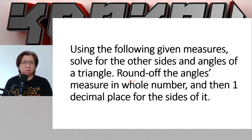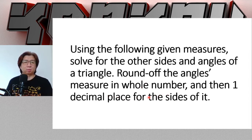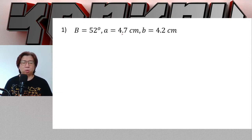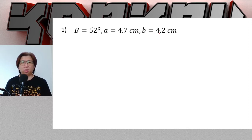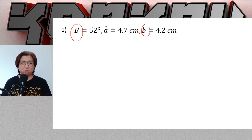Using the following given measures, solve for the other sides and angles of the triangle. Round off angle measures to the nearest whole number, and sides to one decimal place. For example number one, we have: angle B is 52 degrees, side a is 4.7 centimeters, and side b is 4.2 centimeters. The opposite side of angle B is side b, so we can find the measure of angle A first because we have side a.